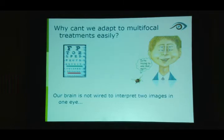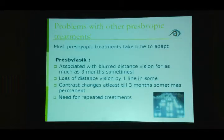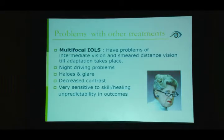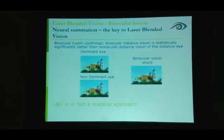Why was multifocal treatment not chosen? If more rings are created in the cornea, the brain has to take both distant and near images from the same eye, and it takes longer to adapt. Problems with presbylasik include: need for repeat treatment, definite change in contrast sensitivity, and loss of one line of distance vision. Multifocal and extended range of vision IOLs also come with night driving problems, halos, glare, and decreased contrast sensitivity — all of which must be explained to patients.